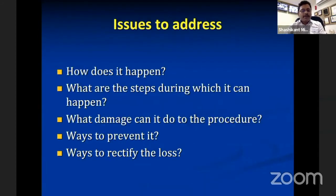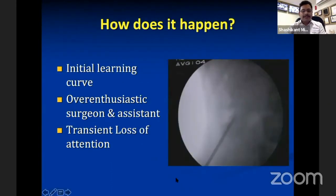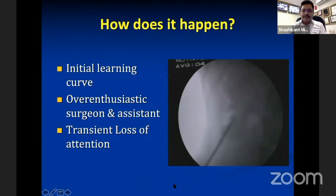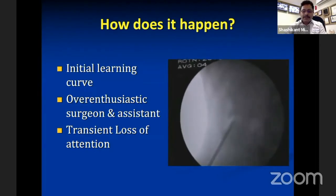The issues we discuss about track loss are: how does it happen, what steps during the procedure can it happen, what damage it can do, what are the ways to prevent it, and how to rectify it. It happens during the initial learning curve, mostly by an over-enthusiastic surgeon with an equally over-enthusiastic assistant — a transient loss of attention. This complication is bound to happen with almost everyone starting PCNL.